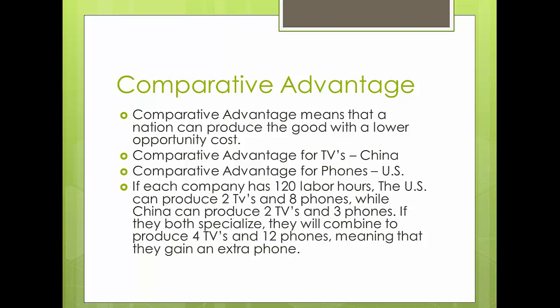Let's say each country has 120 labor hours to spend making TVs and phones. Without specialization, the US produces two TVs and eight phones, and China produces two TVs and three phones, combining to four TVs and eleven phones. If they specialize — the US produces phones and China produces TVs — the US will produce twelve phones and China will produce four TVs, for a total of four TVs and twelve phones. They end up with one extra phone compared to not specializing. This is why the country with the comparative advantage should always produce that good.